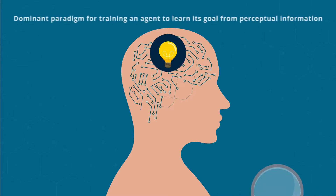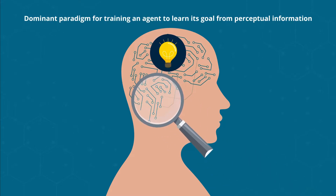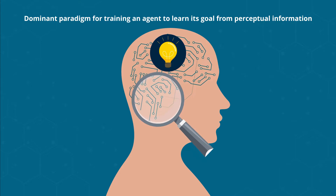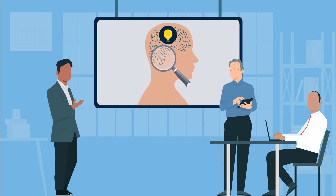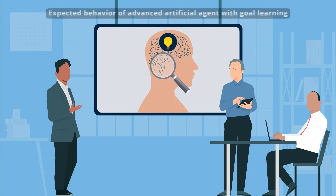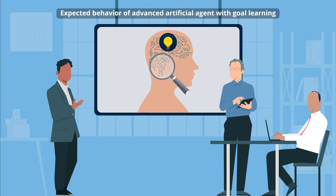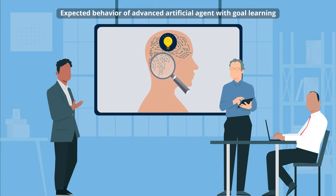Reinforcement learning is the dominant paradigm for training an agent to learn about its goal from perceptual information. In a recent study, a team of researchers from the UK and Australia investigated how an advanced artificial agent with a learned goal can be expected to behave in an unfamiliar environment.